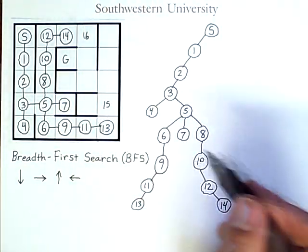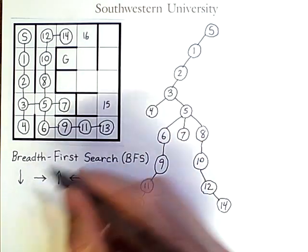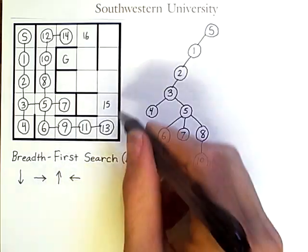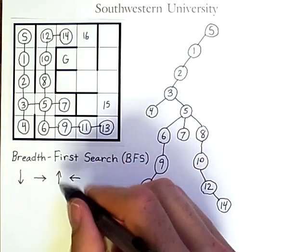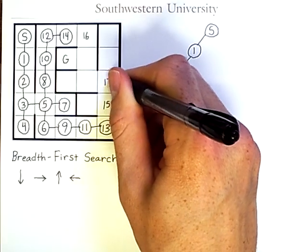Now, from fifteen, I have down being a place I've already checked, right being impossible, up will lead me to the seventeenth node I will check, and left will be the eighteenth node I will check.